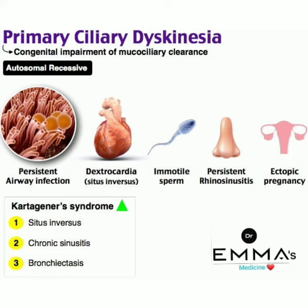Regarding Kartagener syndrome, the classic triad consists of situs inversus, chronic sinusitis, and bronchiectasis. When a patient presents with these three features — situs inversus, chronic sinusitis, and bronchiectasis — we diagnose the case as Kartagener syndrome.